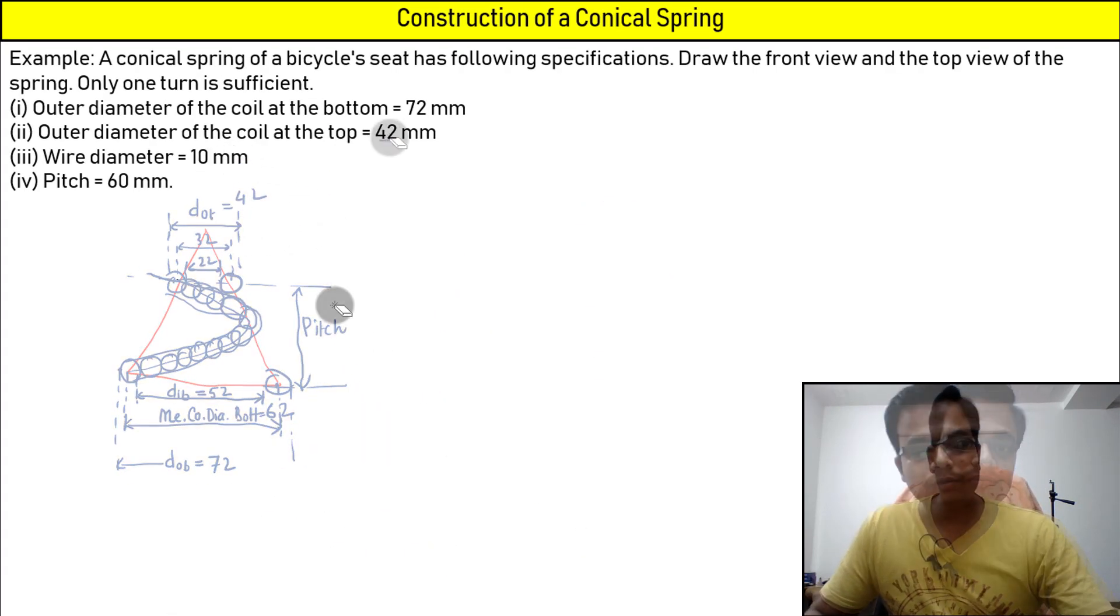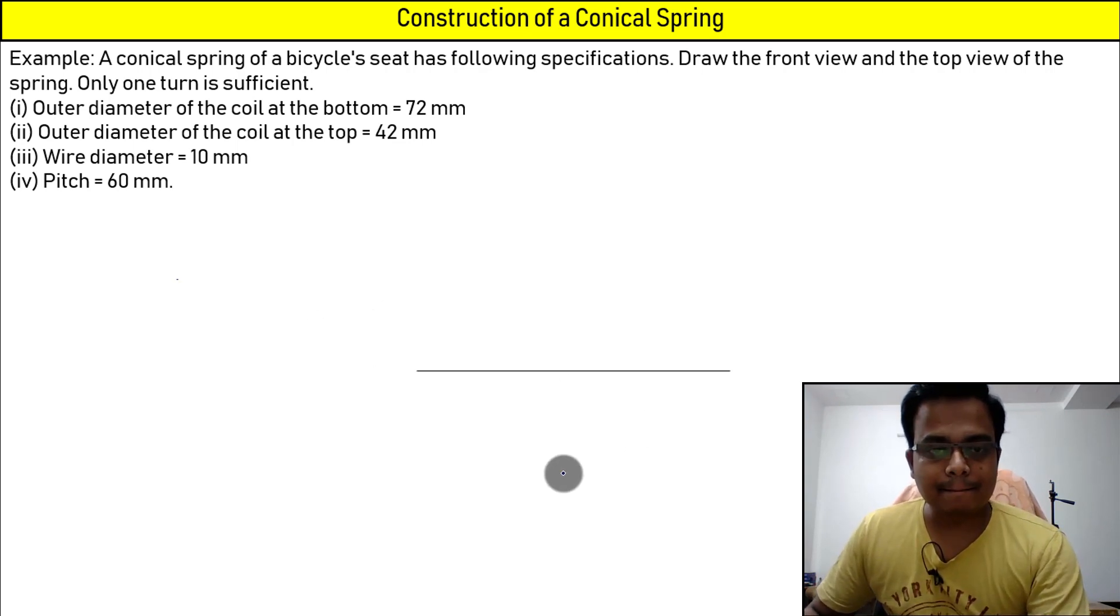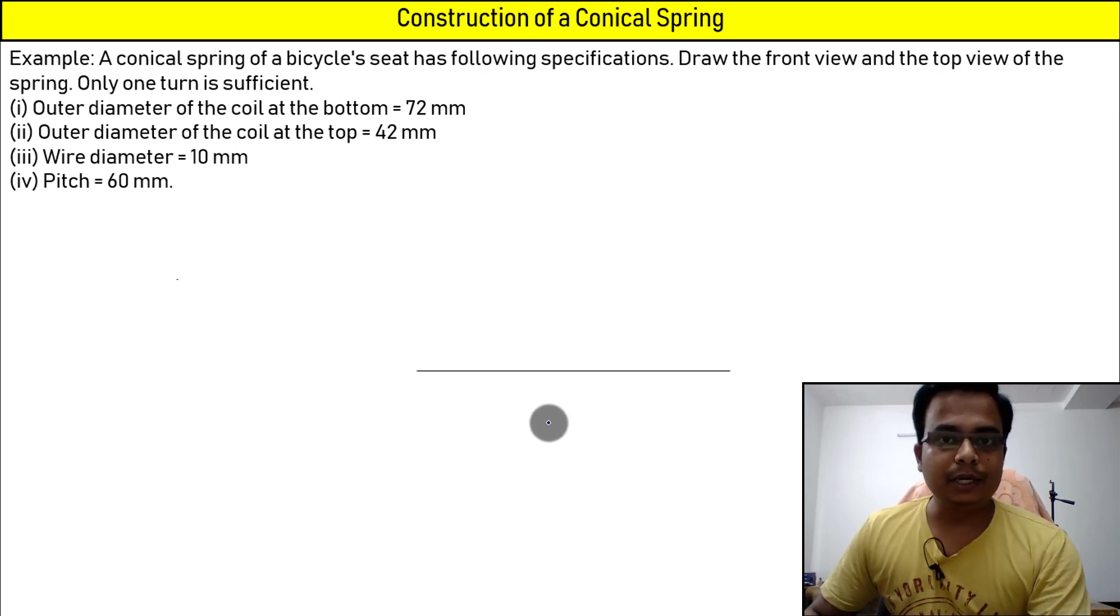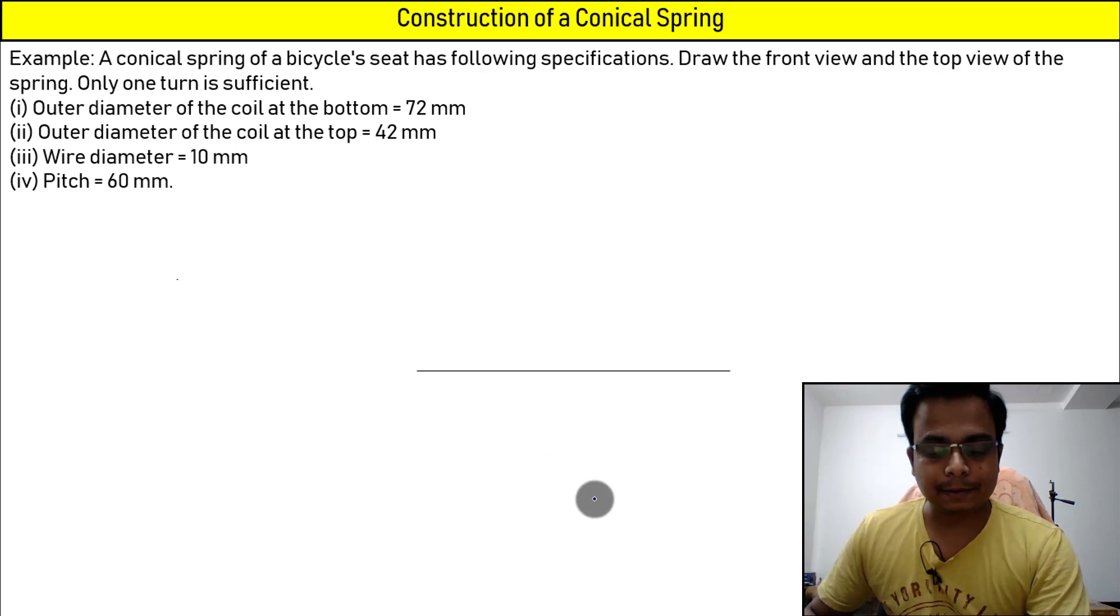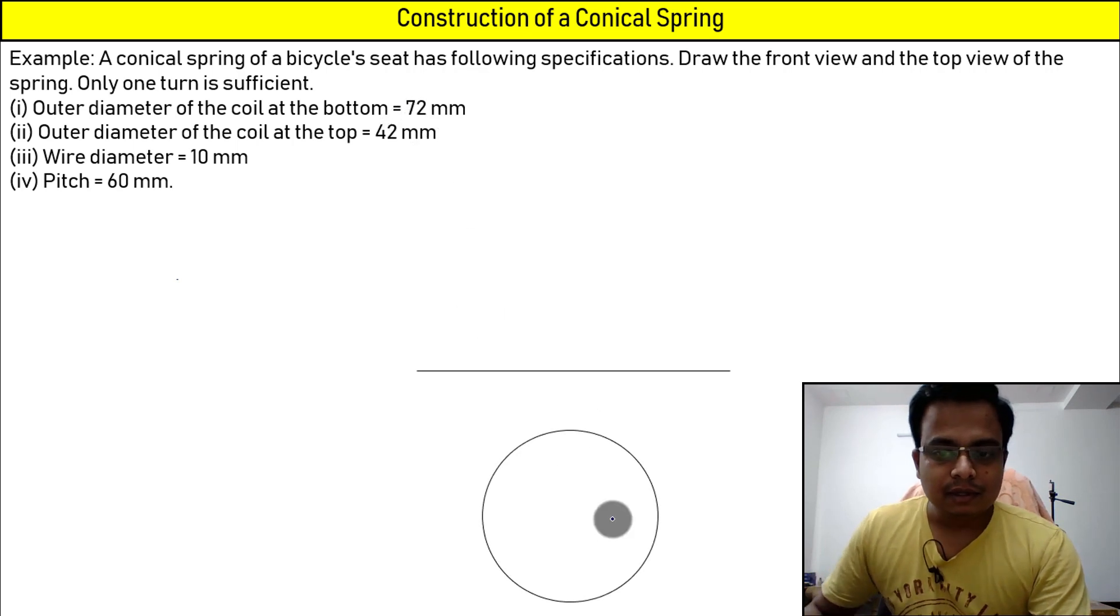So here we go. The first thing to do is to make an XY line. There are going to be two concentric circles. We are making the bottom coil first. So there is going to be this one which is having a diameter of 72. There is going to be an inner coil at the bottom which is going to have a diameter of—this is 72 by the way.